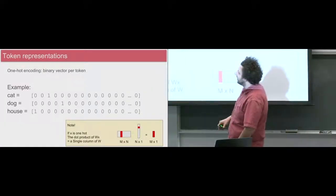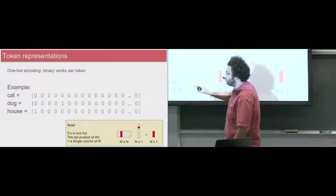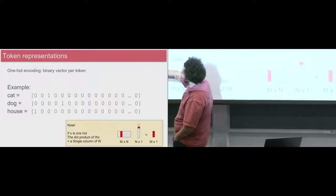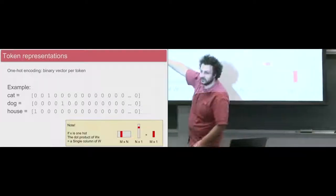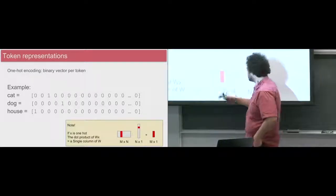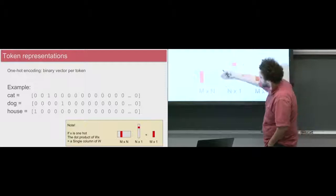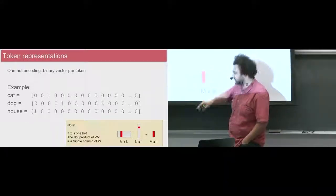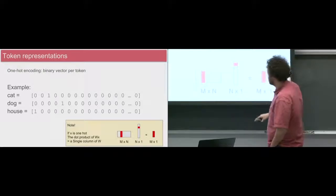One piece of background: how computer scientists want to represent words is as a one-hot vector. We have cat, dog, house, and we have vectors the length of every word in your vocabulary. Each vector has a single element that's one, and everything else is zero. This is the basis for what gives us these embeddings. If we have some matrix W, we can use this one-hot representation to slice out a single column of this matrix, and that column is our embedding — a real-numbered vector that represents the concept.